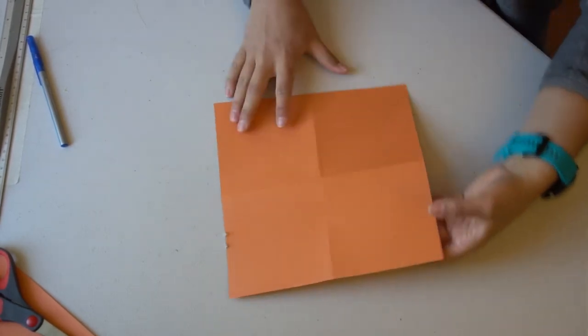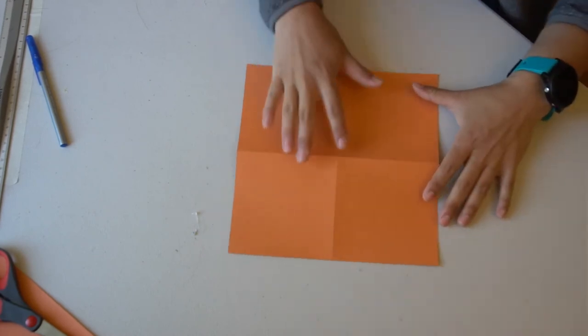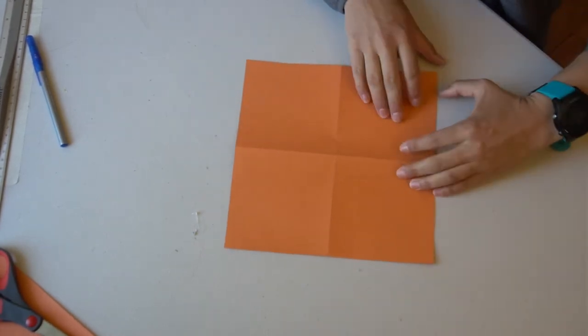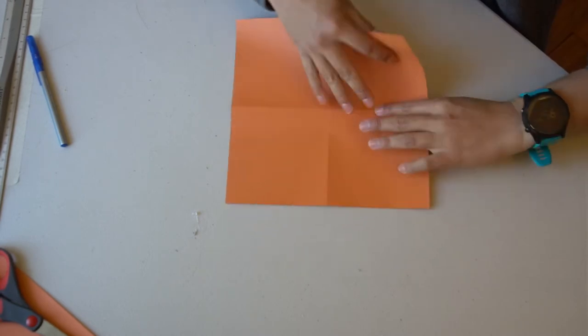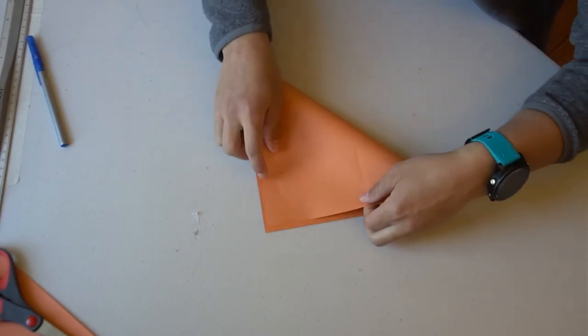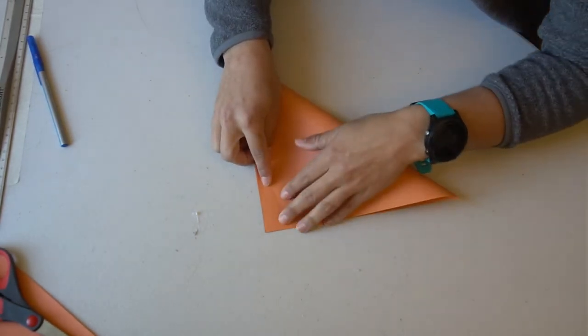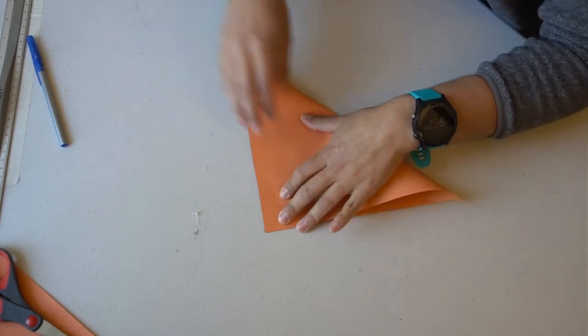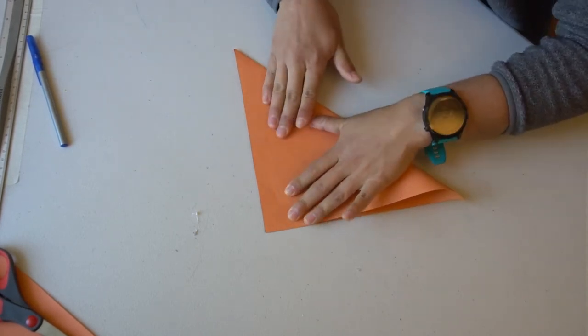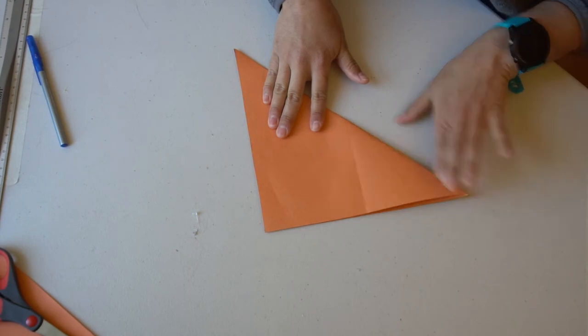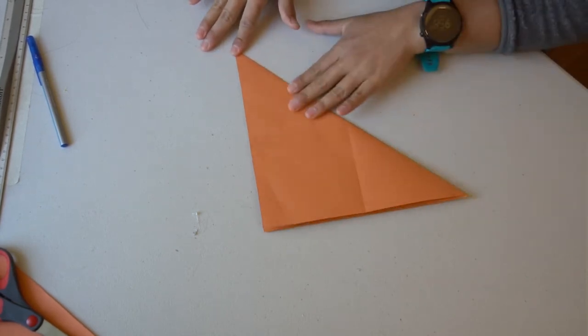You'll want to turn your piece of paper over and fold the corners that are diagonally across from each other. So the bottom left corner will fold up to the top right corner and the bottom right corner will fold up to the top left corner. This will leave you with a star shape of folds in the center of your paper.